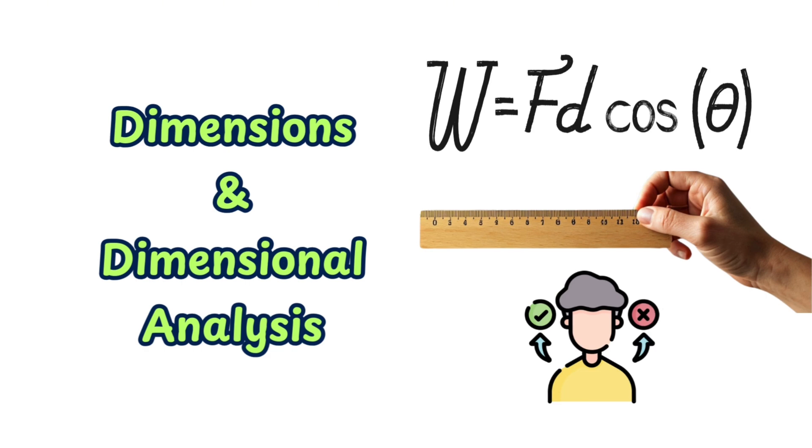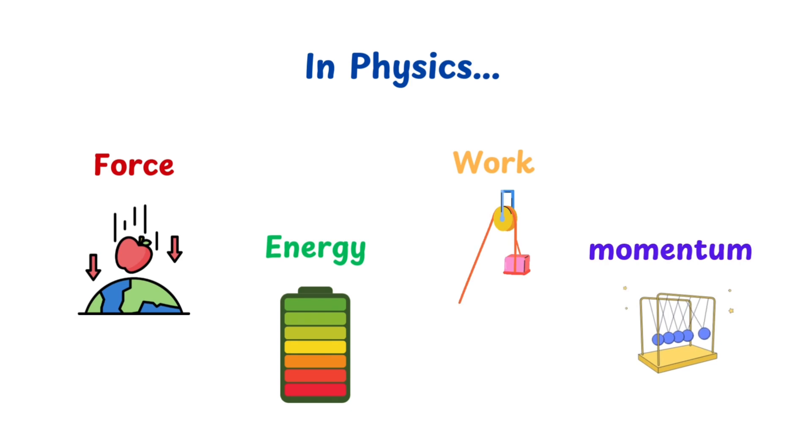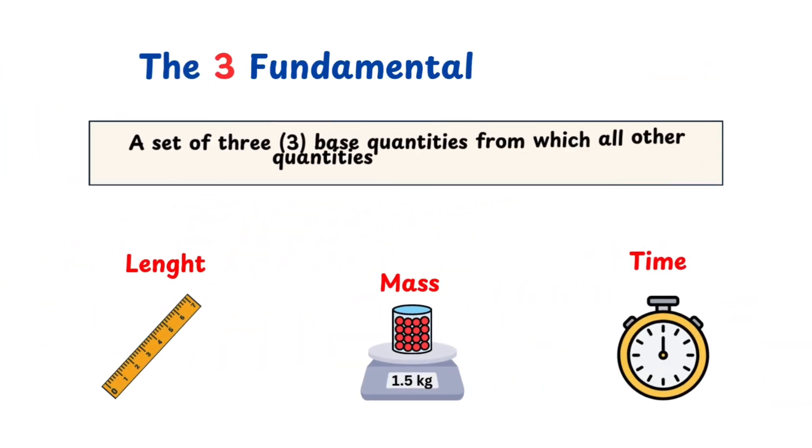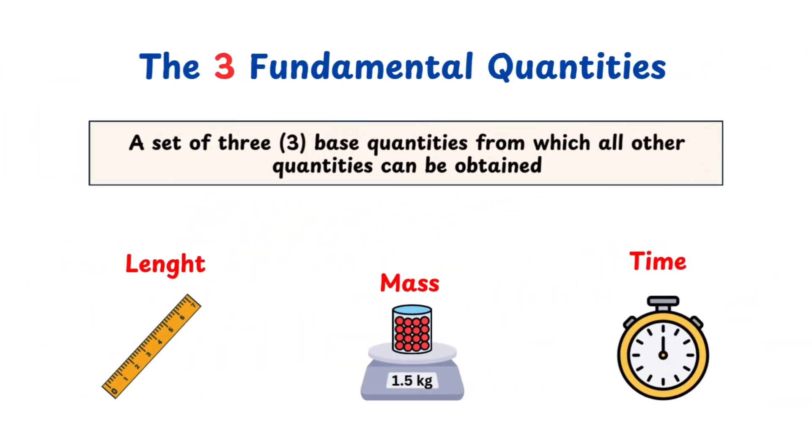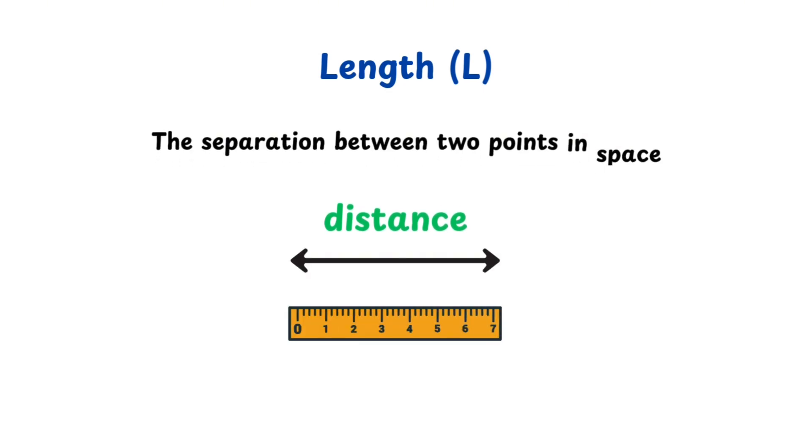In physics, every physical quantity—whether it's force, energy, work, or momentum—can be broken down into just three fundamental building blocks. These are called the base dimensions, and they are: length with symbol L, think of it as distance, the separation between two points A and B. The SI unit for length is the meter with symbol m.